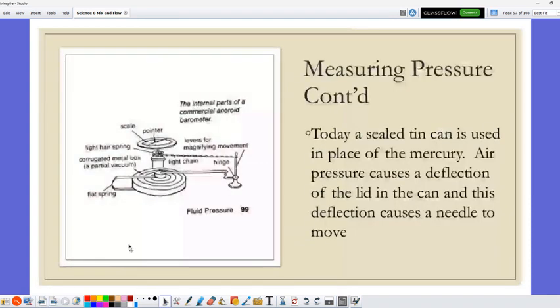Modern-day barometers don't use mercury. Today, a sealed tin can can be used in place of the mercury. The air pressure causes the deflection in the lid of the can, and this deflection causes the needle to move, and we can calibrate that with pressure as well.